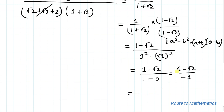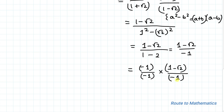So we have 1 minus root 2, divided by 1 minus 2, which equals 1 minus root 2 divided by minus 1. We multiply both numerator and denominator by minus 1, so the denominator becomes 1 and the expression becomes root 2 minus 1. So root 2 minus 1 is our simplified form of this given radical expression. I hope you have understood the solution. Thanks for watching — please subscribe to my channel and click the bell icon for more such interesting videos.